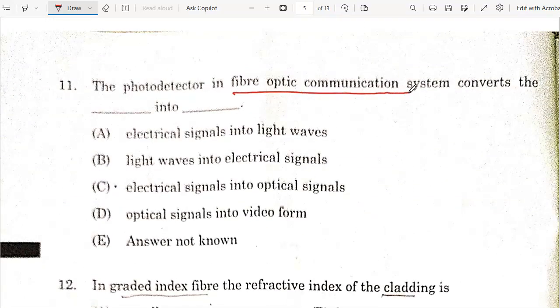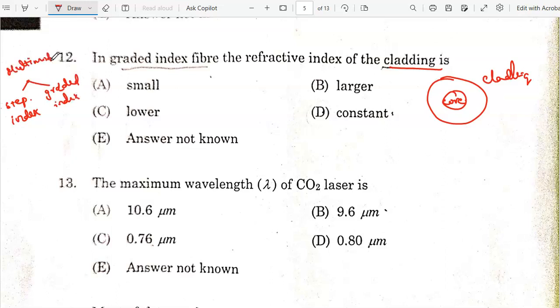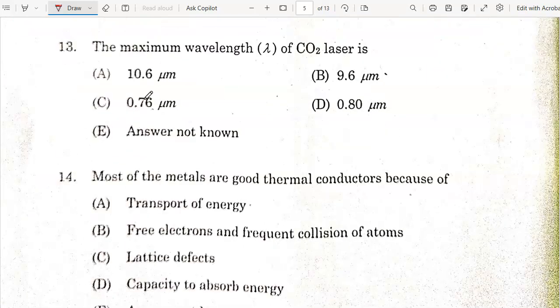Photo detector in fiber optic communication system converts light waves into electrical signals. So option B is the correct answer. In graded index fiber, the refractive index of cladding is lower than the core. The cladding is the outer layer surrounding the core.